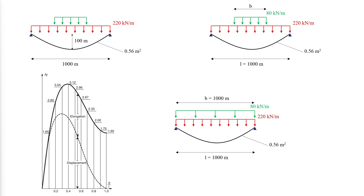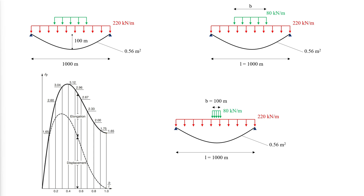For live load acting over the entire span (B/L = 1), the mid-span deflection will be 1.65 m, close to half of the maximum value. For B/L = 0.4, the displacement of the cable accounts for approximately two-thirds of the total deflection and the elongation for only one-third. For B/L = 1, the deflection is entirely due to elongation of the cable. It is also interesting to note that for a live loaded length of only 10% of the span (B/L = 0.1), the mid-span deflection will be the same as for live load acting over the entire span, clearly illustrating the effect of the change of geometry.